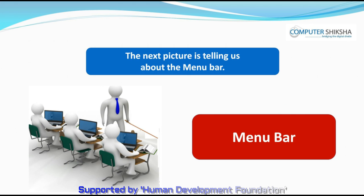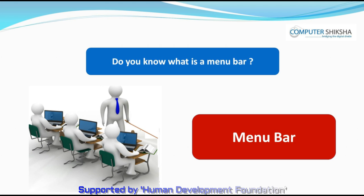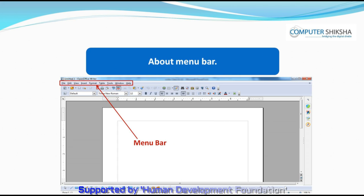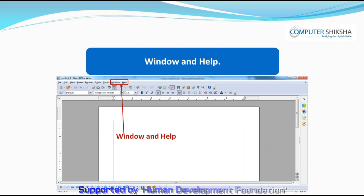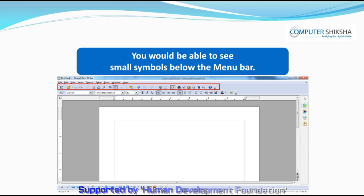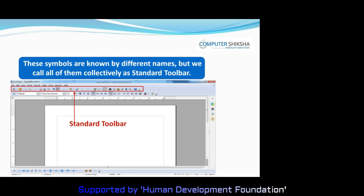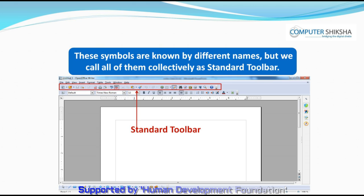The next picture tells us about the Menu Bar. The Menu Bar is the most important part of Writer — it is from here that we get to do all our work related to the file, like formatting text, merging documents, or saving files. The Menu Bar has the options for File, Edit, View, Insert, Format, Table, Tools, Window, and Help. Below the Menu Bar you can see small pictures — these symbols are known by different names, but we call all of them collectively as Standard Toolbar.